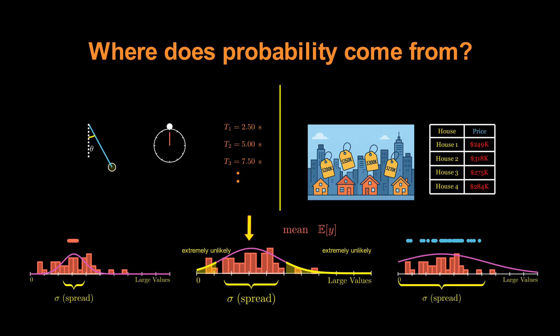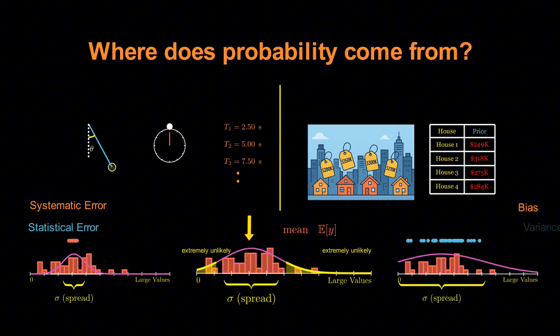And here's the key point. Those fluctuations come from two distinct sources. In physics, we call them systematic and statistical errors. In machine learning, we call them bias and variance.